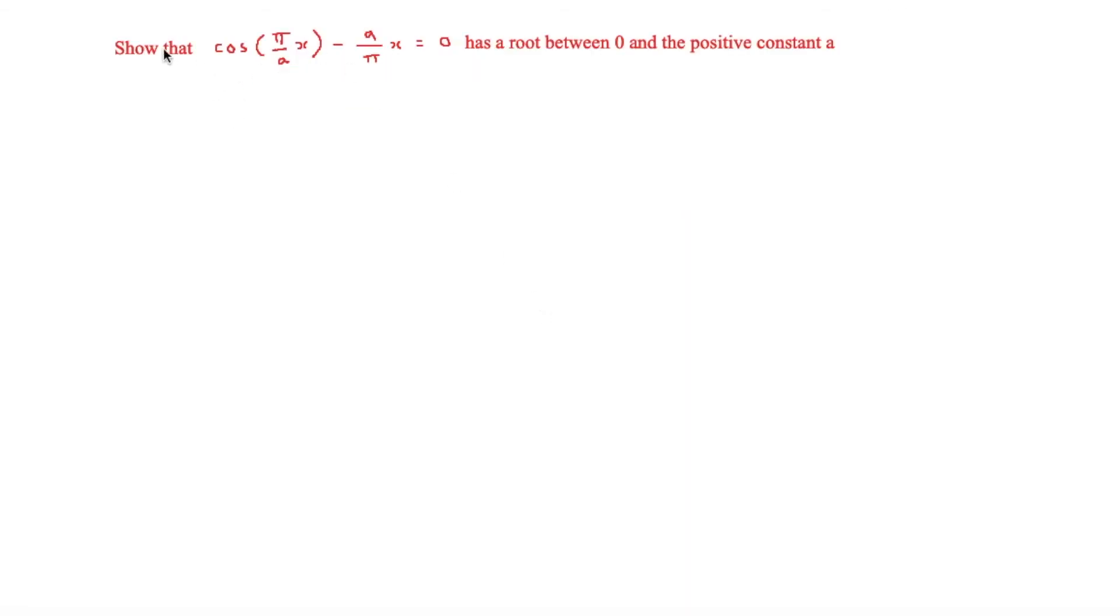The final question says show that cos of pi over a times x minus a over pi x equals 0, and this has a root between 0 and the positive constant a. In order to do this, we're going to evaluate the function at f of 0 and also f of a.